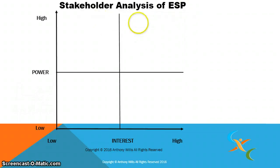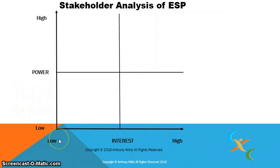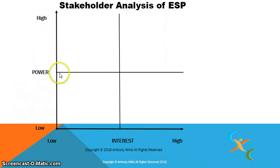Before we answer those questions, let's look at the framework we're going to use. You see this matrix here? The horizontal line is the x-axis, and it measures the level of interest in the topic or subject — from low, moving to the right, increasing to high interest. On the vertical axis, it indicates the level of power — low power to influence the outcome, or high power.